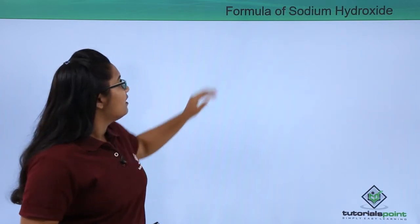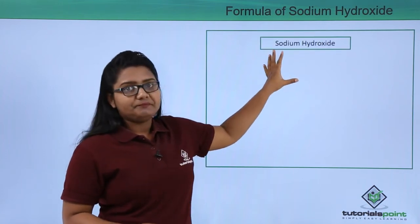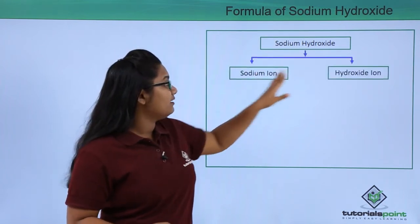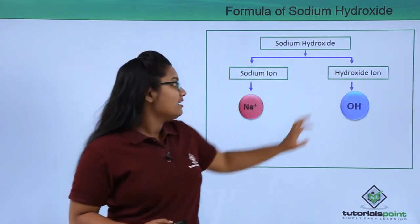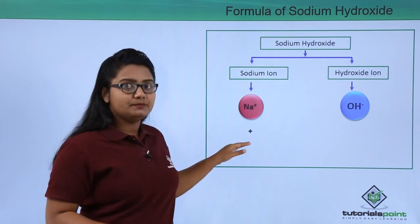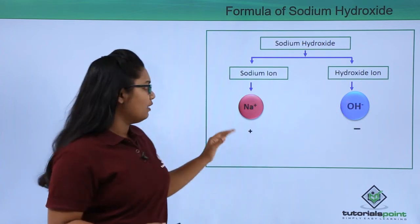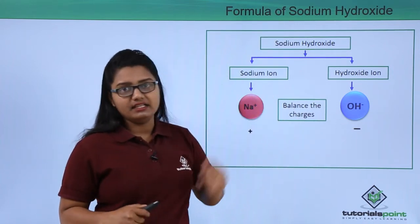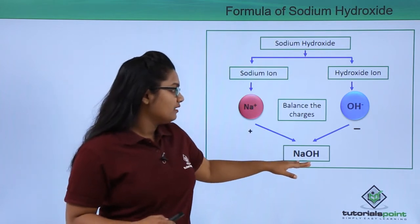Now let us write the formula for sodium hydroxide. It is made up of sodium and hydroxide ions. From our tools, sodium is represented as Na⁺ and hydroxide is OH⁻. We can clearly see that sodium has a charge of 1+ and hydroxide has a charge of 1−. These balance each other exactly, so we do not need to adjust the number of ions.